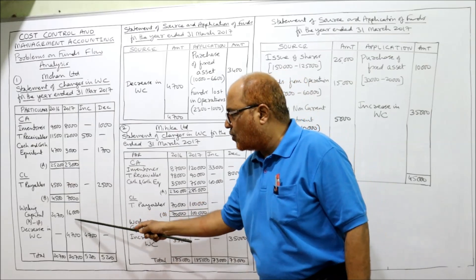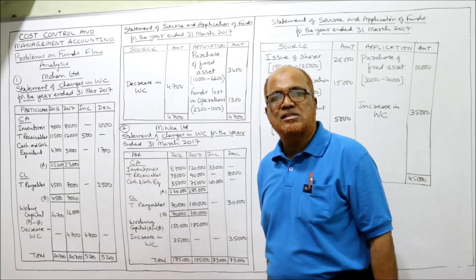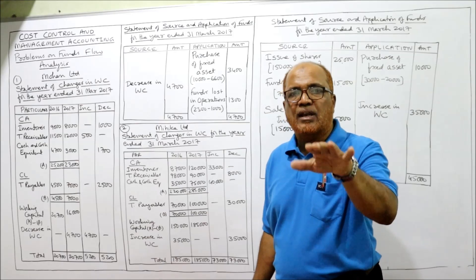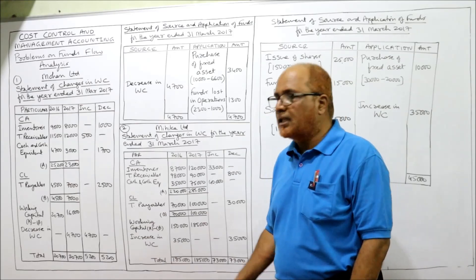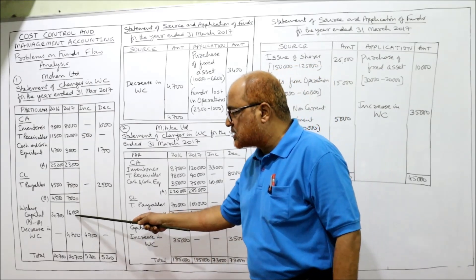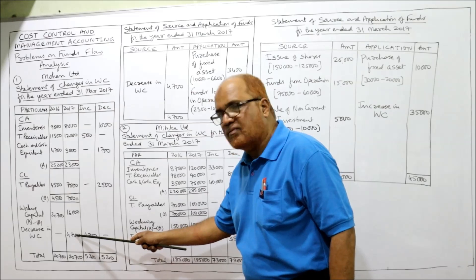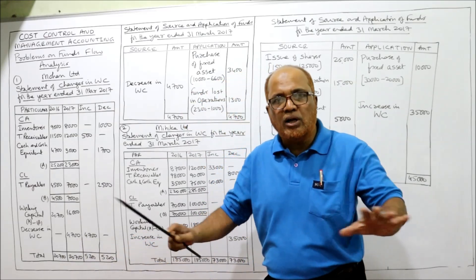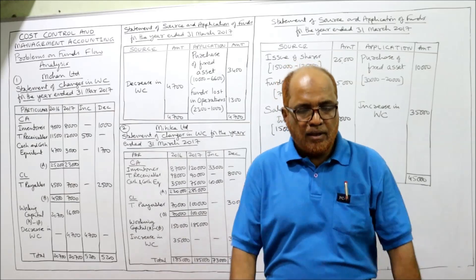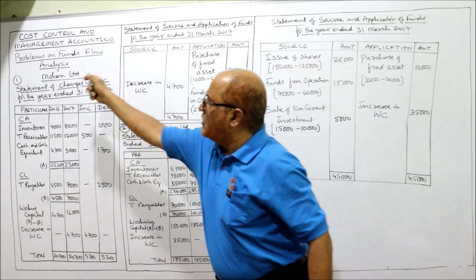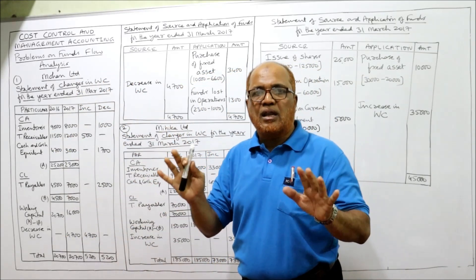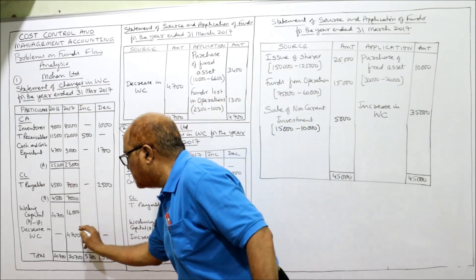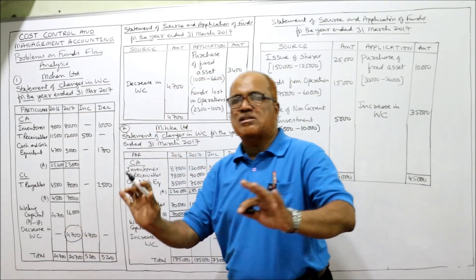Put this 4,700 in the column where the lesser amount is — that is the current year column with 16,000. Now the totals of both columns will match at 20,700. The purpose of preparing this statement is to find out the increase or decrease — we got the answer 4,700.